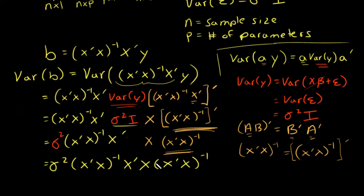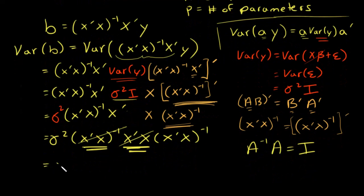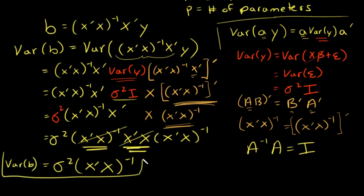Let's look at what we have here. This is exactly the same as this. So remember, if you have A inverse times A, you get the identity matrix by definition of an inverse. So this is the same as this guy except this one is inverted. So they basically cancel each other out. And you're left with sigma squared x transpose x inverse. This is the variance of my least squares estimator.